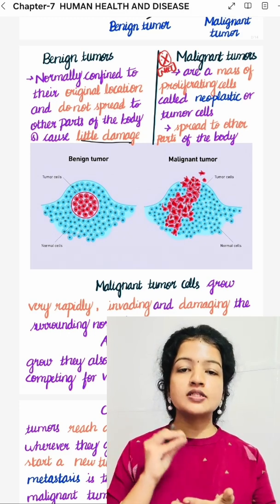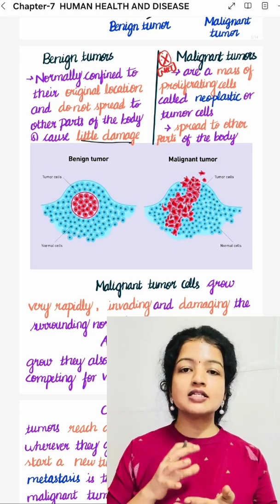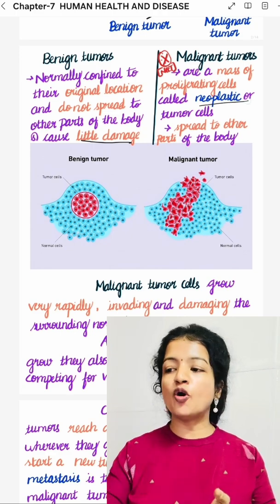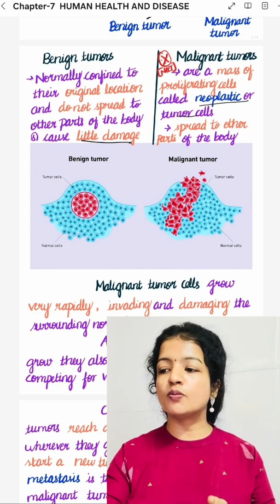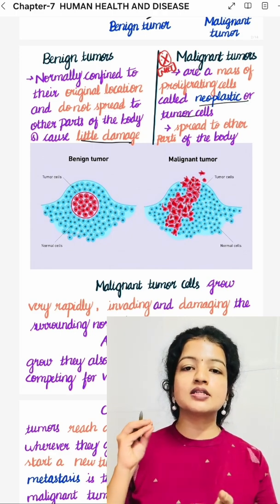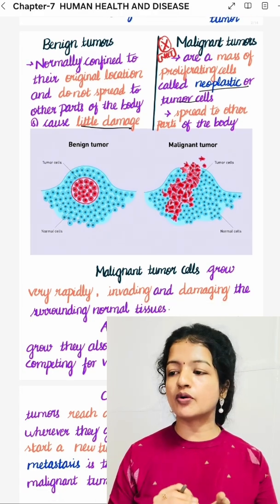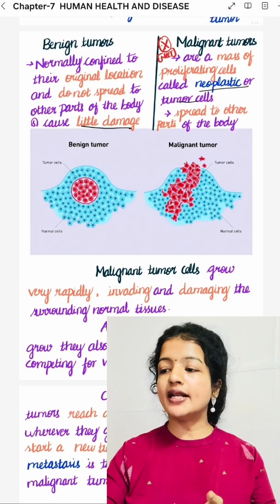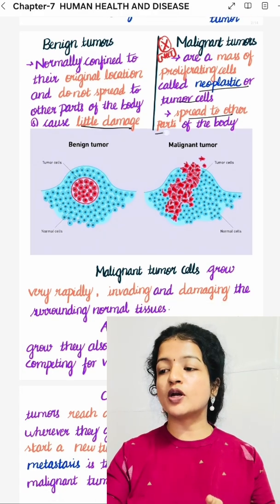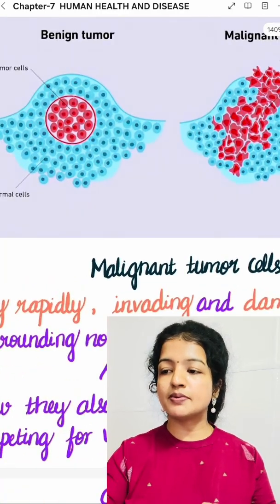Whereas a malignant tumour is the most dangerous form of tumour. It is a mass of proliferating cells — neoplastic or tumour cells. Malignant tumours are neoplastic cells, which is very important. Malignant tumour is very dangerous because it spreads to other parts of the body.